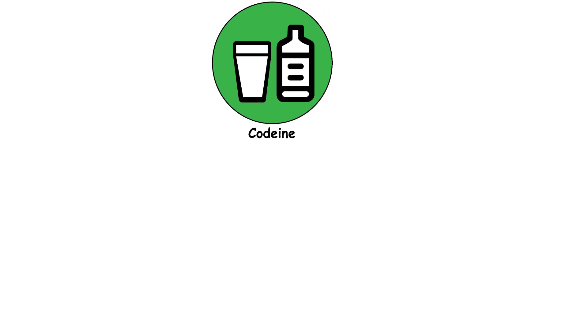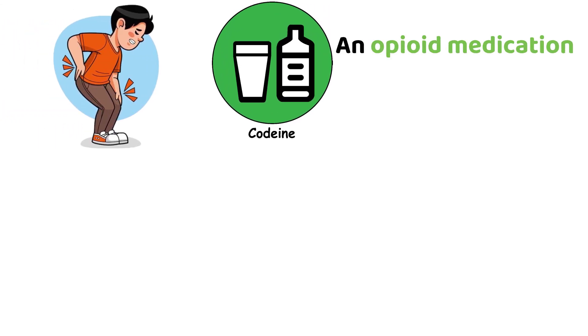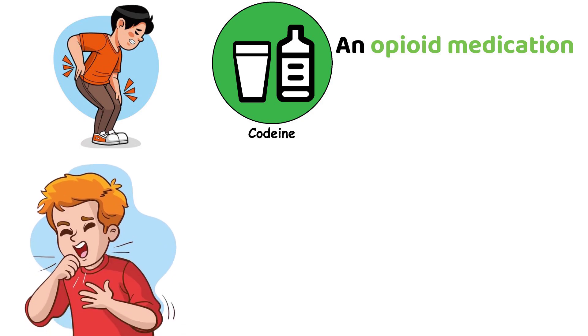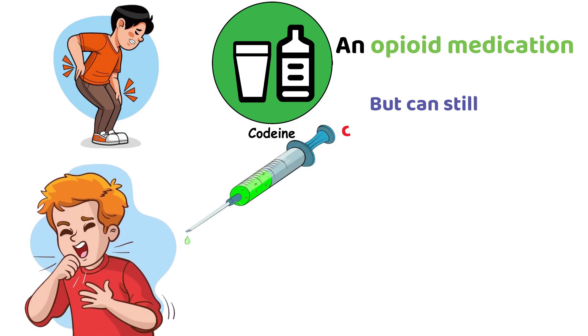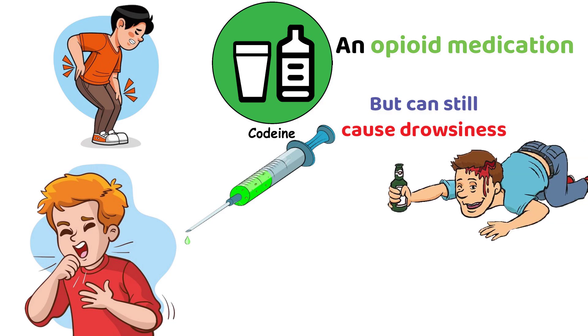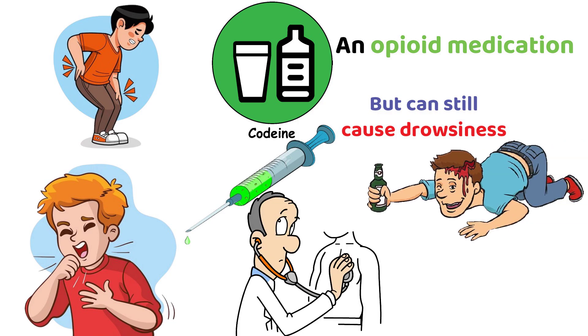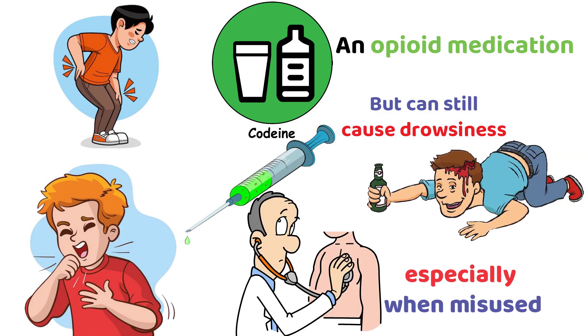Codeine is an opioid medication used to treat pain and coughing. It is less potent than morphine, but can still cause drowsiness, euphoria, and respiratory depression, especially when misused.